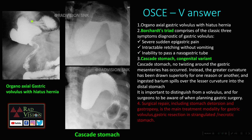Cascade stomach is a congenital variant that mimics gastric volvulus. In gastric volvulus there is twisting of the mesentery or vascular compromise, whereas in cascade stomach the greater curvature is superiorly placed and the lesser curvature is inferiorly placed — contrast fills the lesser curvature first, then the greater curvature. Cascade stomach does not require surgery, whereas gastric volvulus requires surgical repair: stomach detorsion and gastropexy, or gastric resection in strangulated or necrotic cases.